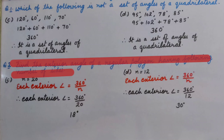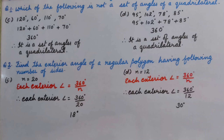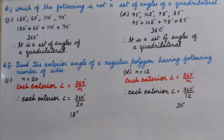Question number 2: Find the exterior angle of a regular polygon having the following number of sides. Part C: 20 sides. As we know, the sum of all exterior angles of a polygon is 360 degrees. So each exterior angle equals 360 degrees divided by N. That gives 360 divided by 20, which is 18 degrees.